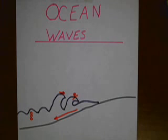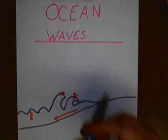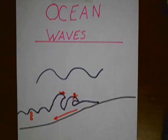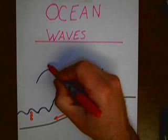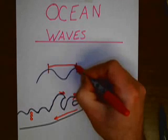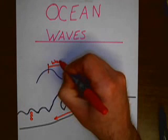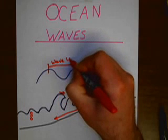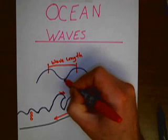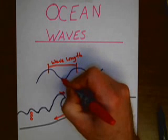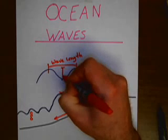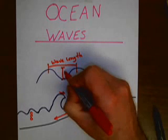Now, let's talk a little bit about the parts of a wave. If you're looking at a wave, the distance between crests — like this — is called the wavelength. And from the top of the wave to the bottom of the wave, or the crest to the trough, this distance right here — that's called the wave height.